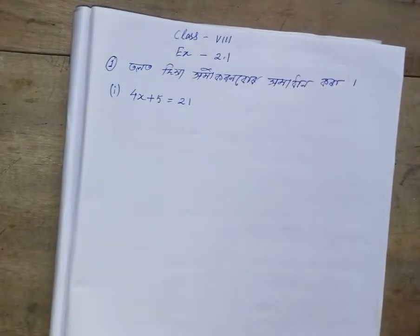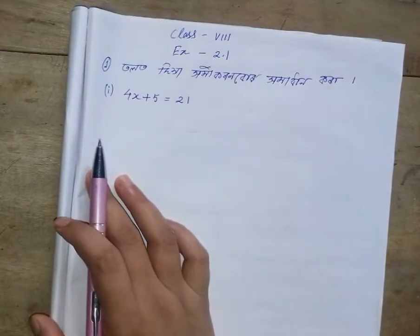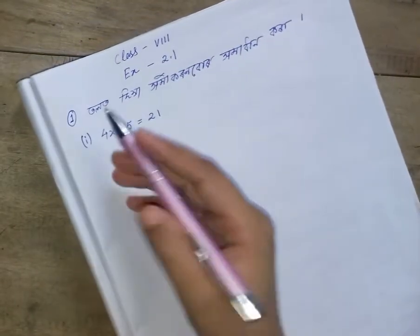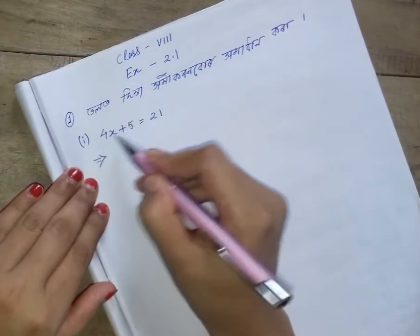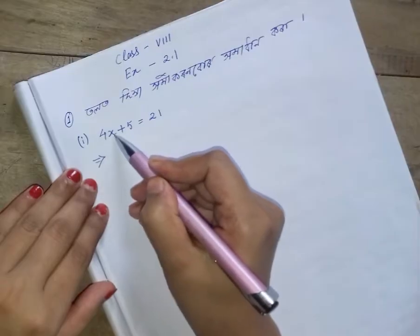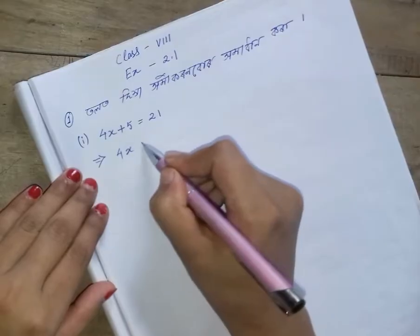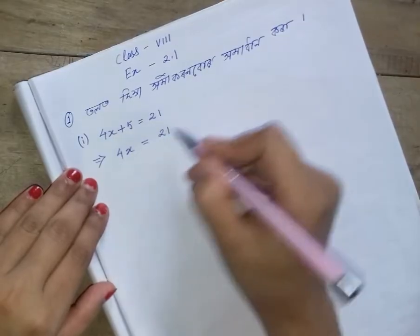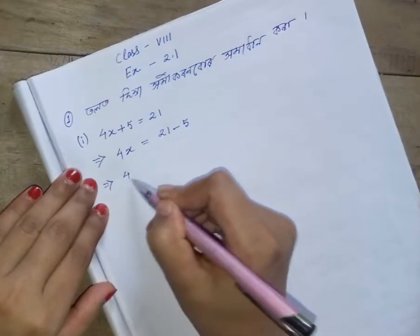4x plus 5 equals 21. We will solve this question. The question is minus 1 to 12. I am 4 is alpha, where 4 equals 4x. 5 means 4x. That blocks 3 equals 5, which allows both 4 equals 4.